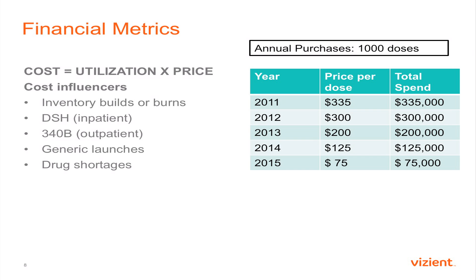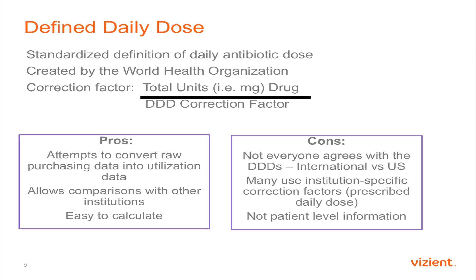If you simply rely on financial metrics, cost may not accurately represent utilization. For example, based on an echinocandin: if every year since 2011 your hospital bought 1,000 doses, in 2011 you paid $335 per dose ($335,000 total), and now it's $75 a dose. People would say antibiotic utilization decreased, but the reality is only the purchase price decreased — utilization remained the same. That's why this metric is misleading.